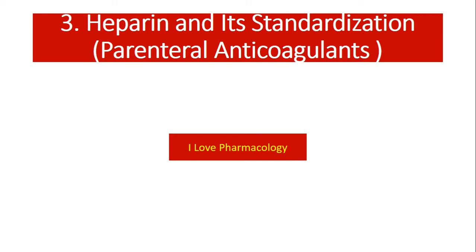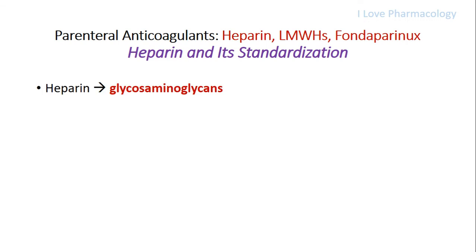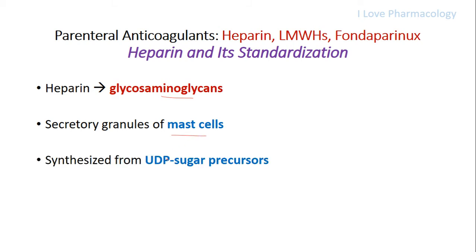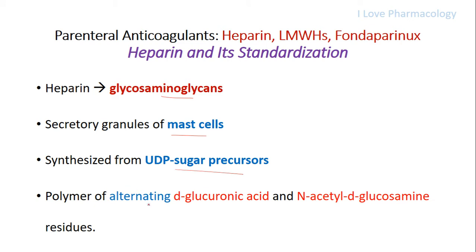Moving on to heparin and its standardization. Heparin is a glycosaminoglycan which is secreted from alpha granules of mast cells. It is synthesized from UDP — Uridine Diphosphate — glucose sugar precursors, as a polymer of alternating D-glucuronic acid and N-acetyl-D-glucosamine residues.